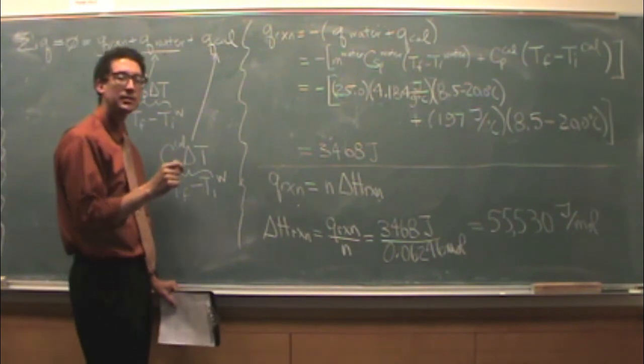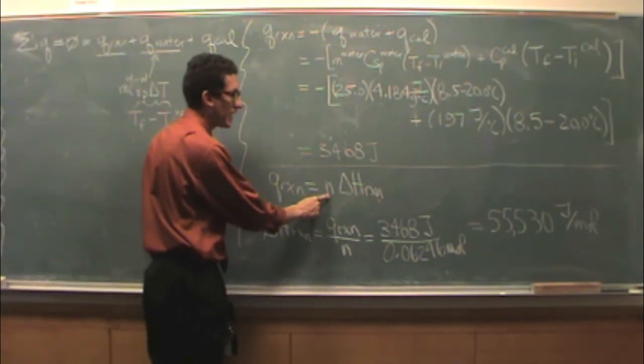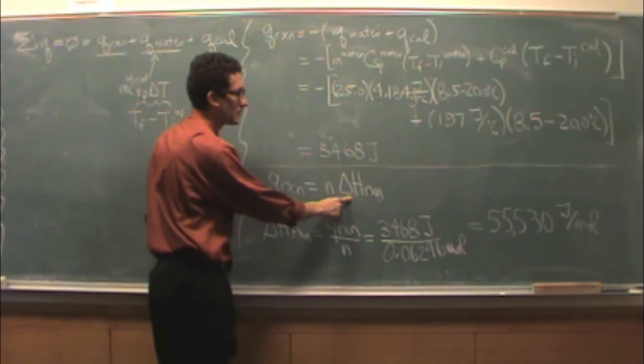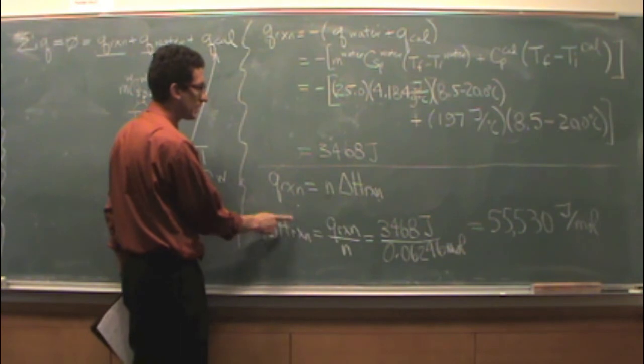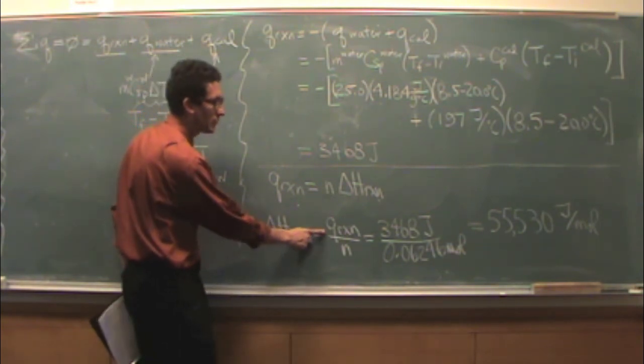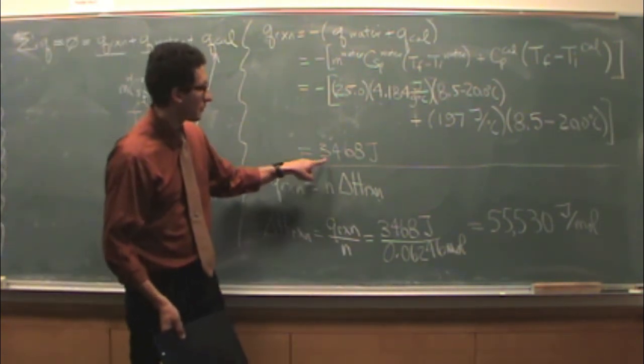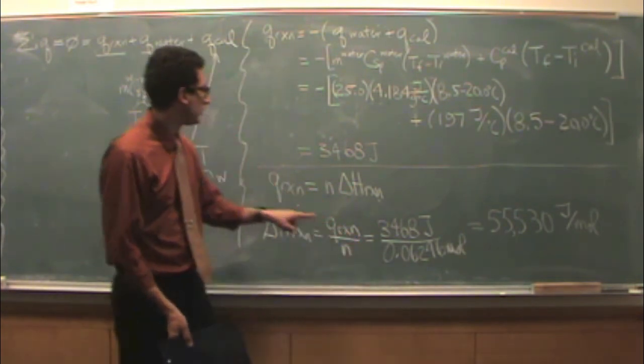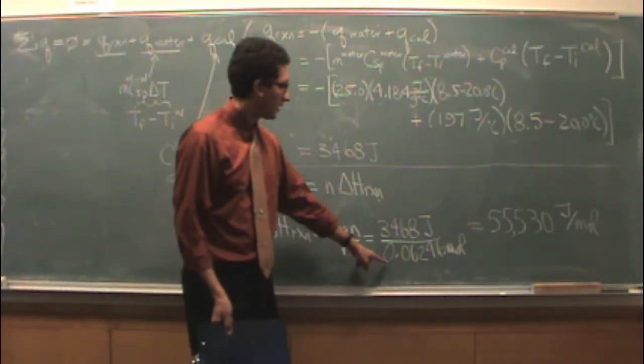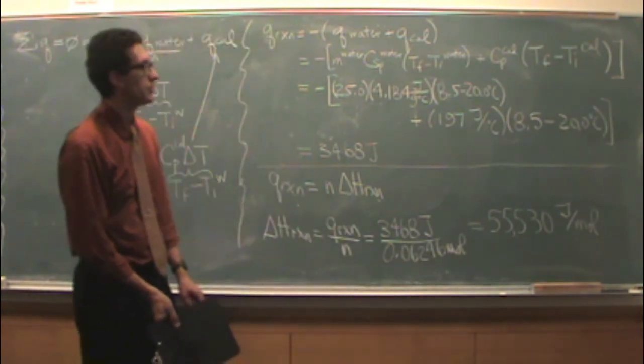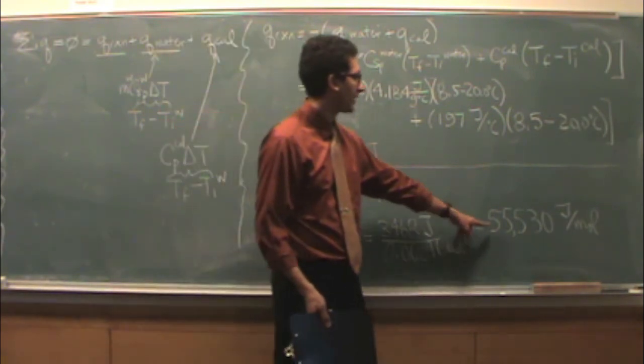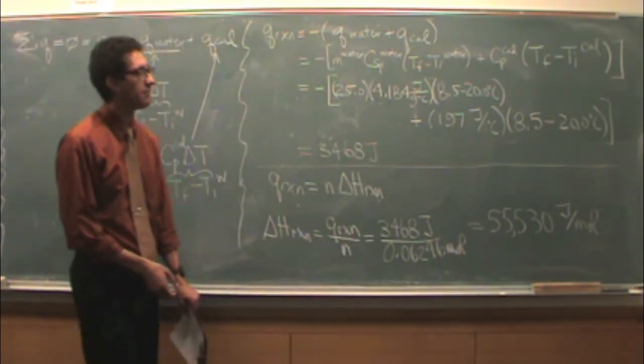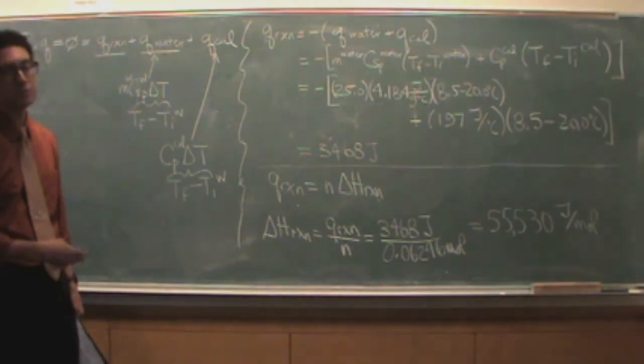There's one more step actually to go to delta H of reaction. Q reaction is n moles times delta H of reaction. So if I just do a little cross multiplication where I divide by n, delta H of reaction is Q reaction over n. Q reaction we found up here, and then the moles we found previously, 0.6246 moles. And if you divide that out, you'll get 55,530 for our sample data, joules per mole.